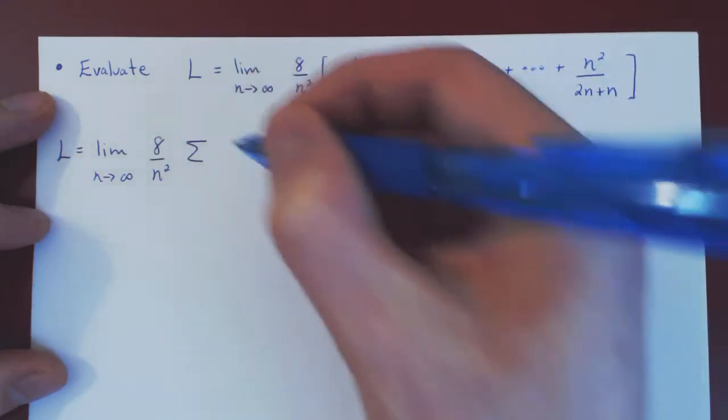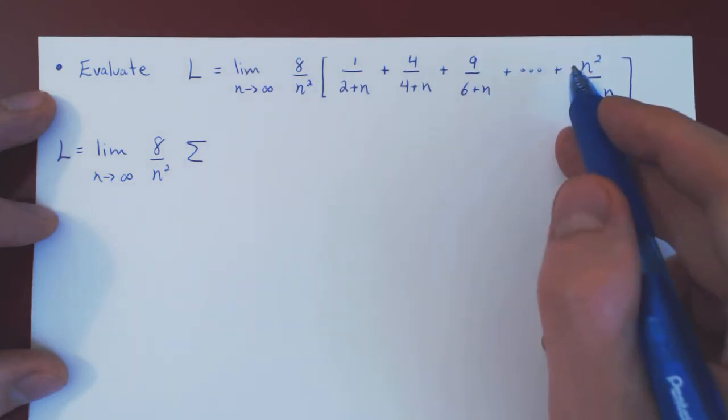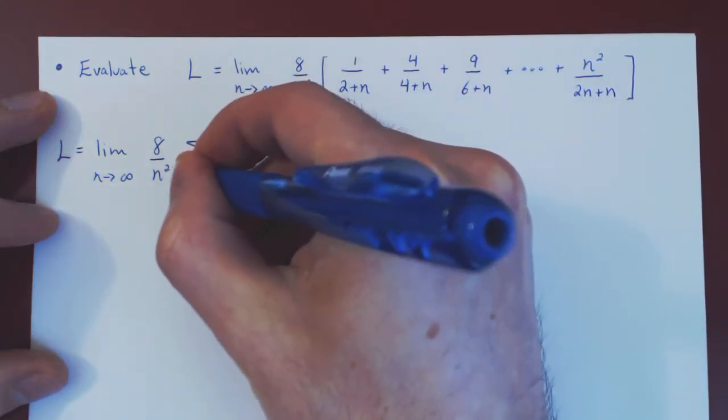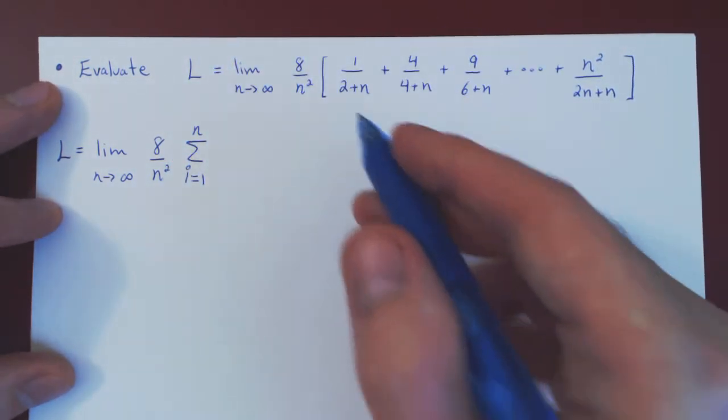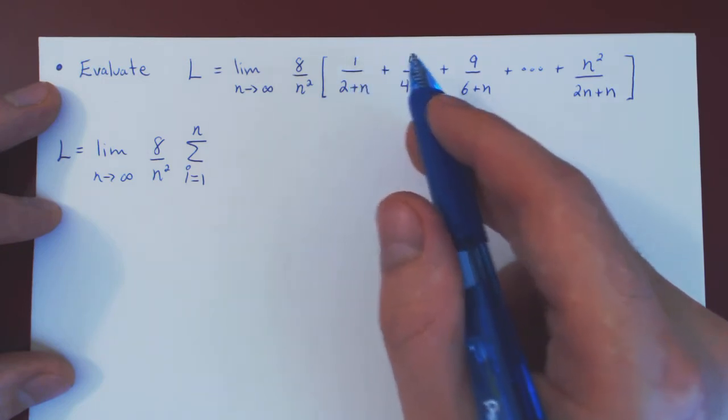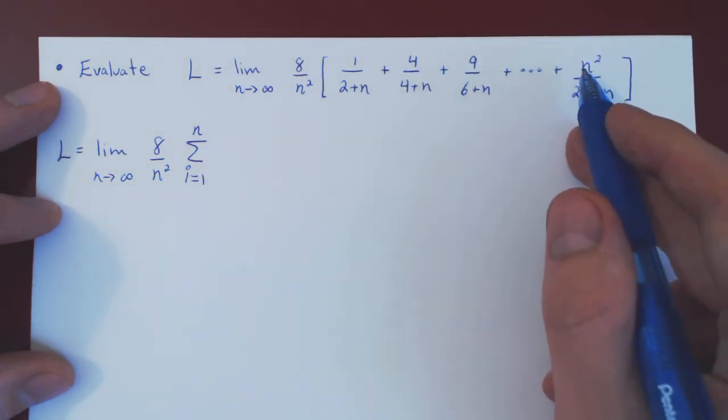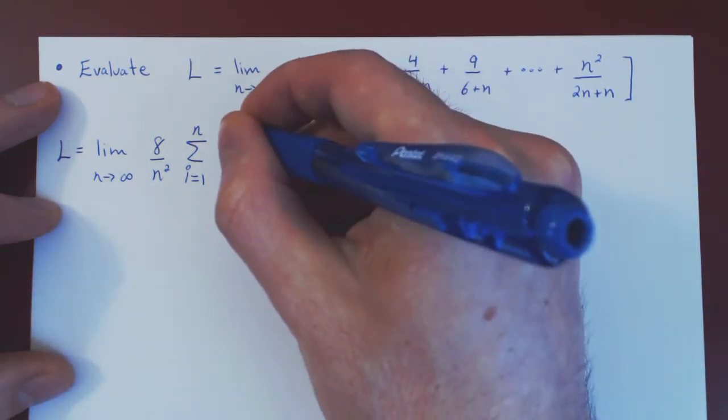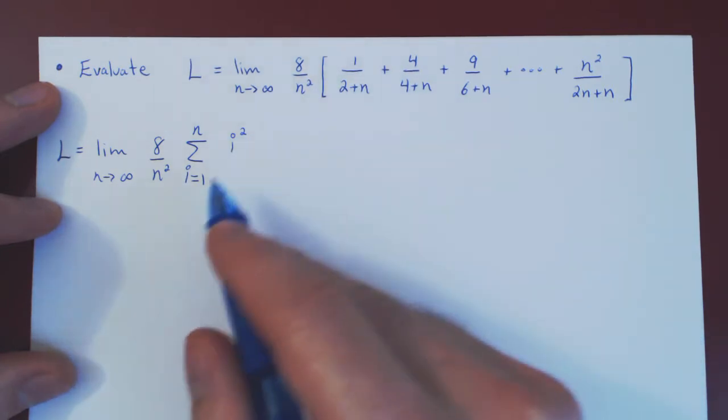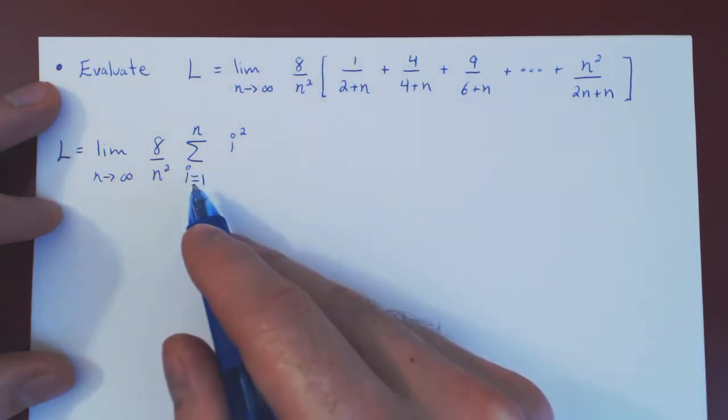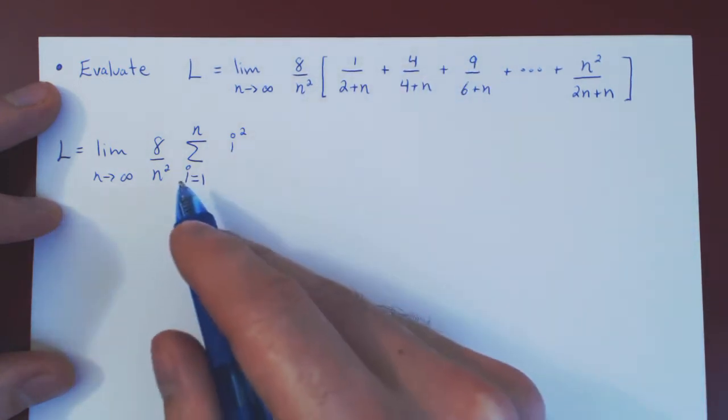which we can then of course evaluate not directly but using instead the fundamental theorem of calculus. And so that's the idea. So can we turn this into the limit of a Riemann sum and then we can use the fundamental theorem of calculus. So let's see. So l is equal to the limit as n goes to infinity of, well, the first thing is to realize that we are summing here n terms, right? 1 squared plus 2 squared. So 1 squared, 2 squared, 3 squared up to n squared.